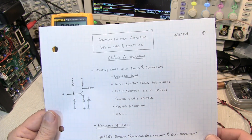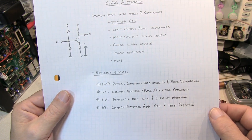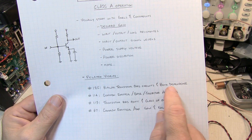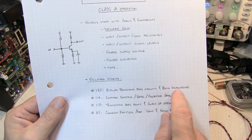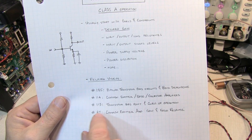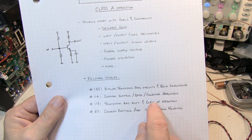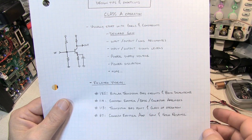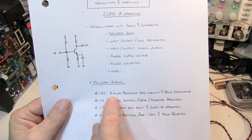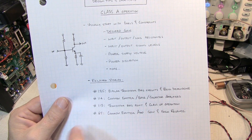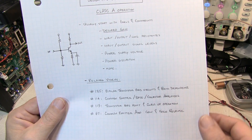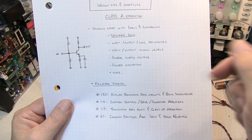There are a couple of related videos that might be helpful alongside this one. Number 185 talks about transistor bias circuits and dependence on current gain or beta, and how to minimize that dependence. Numbers 113 and 114 talk about the transistor bias point and class of operation. Video number 67 goes through some common emitter amp gain and frequency response calculations. I'll put links to each of these in the video description below.